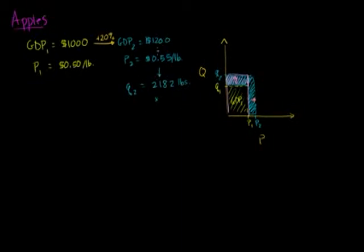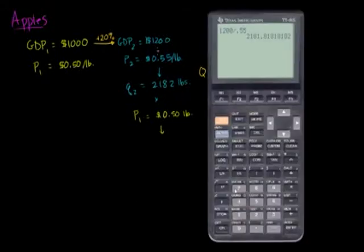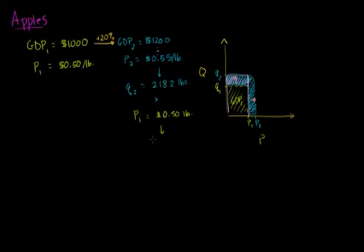And then I could multiply this times the price. So this quantity is 2,182 pounds. And then I could multiply it times the price in year one. In year one's price. So I'm going to multiply it times P1 is equal to 50 cents a pound. 50 cents per pound. And this will give me. Let me just get my calculator out. 0.5. And I get 10.90. I'll round it to 10.91. So this is equal to 10.91.